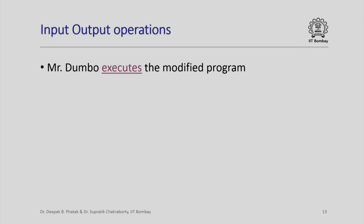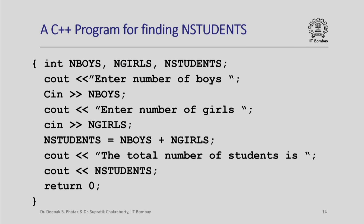You will agree that with this simple mechanism we have actually made Dumbo a very real computing device. As a matter of fact, the program that we have written to calculate the total number of students in a class given the number of boys and girls — that program uncannily looks very similar to an actual C++ program which we shall later learn to write for an actual computer. Let us look at a C++ program. Here is a C++ program to find n_students.